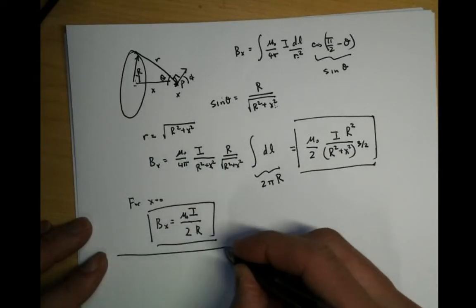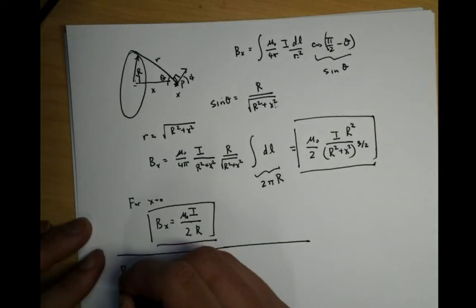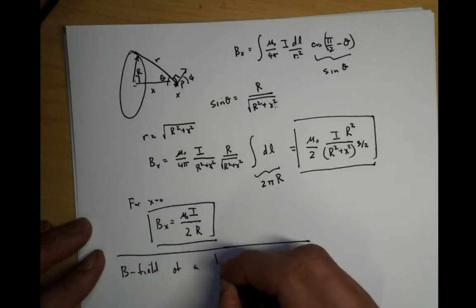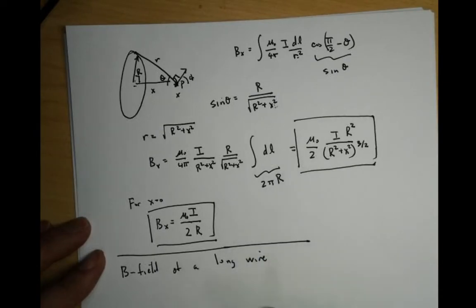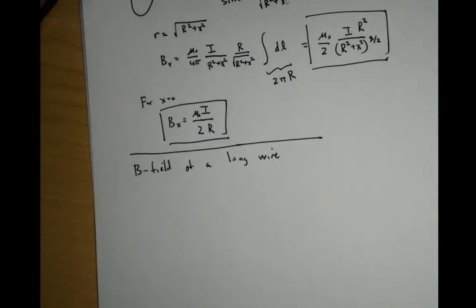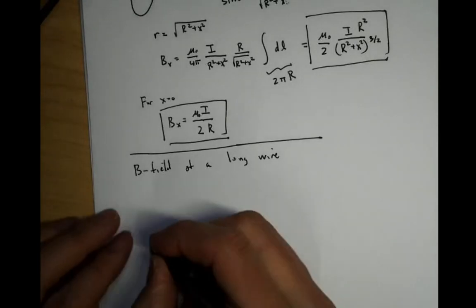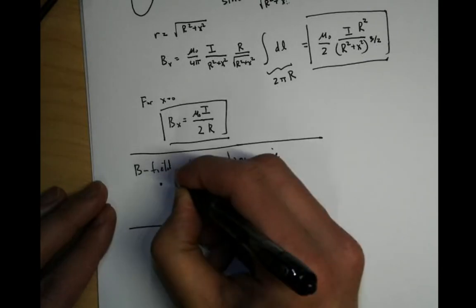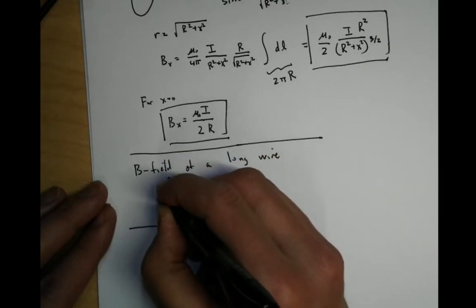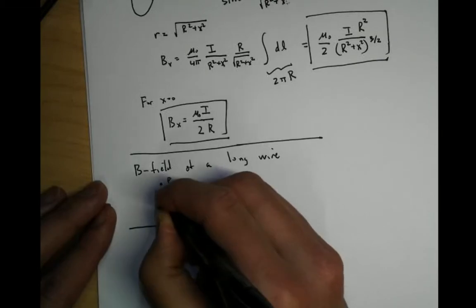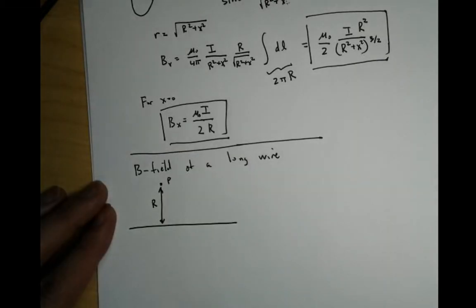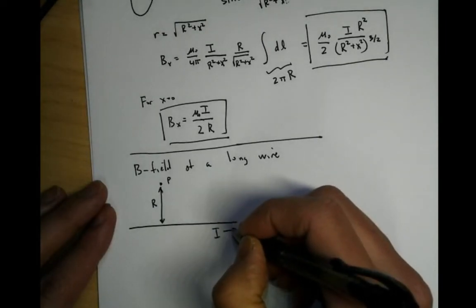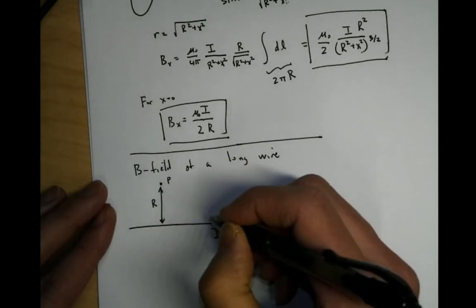Next, let's do the B field of a long wire. I have a long wire with current I flowing along it. I'm considering a point P which is some distance R away from this long wire, and I want to figure out what the B field at that point P would be.